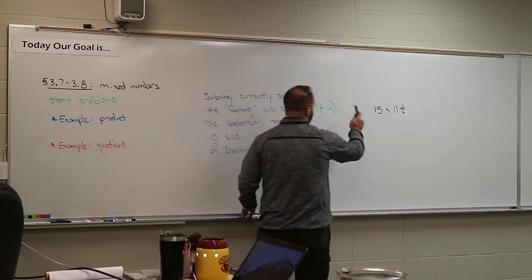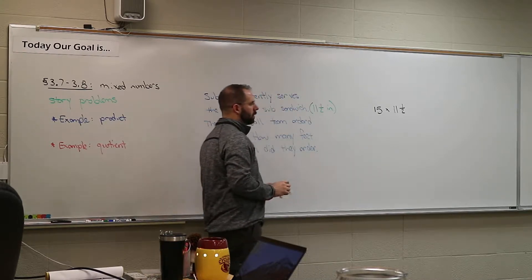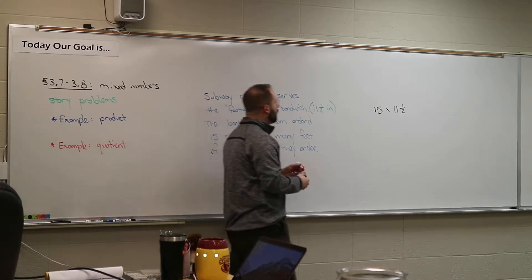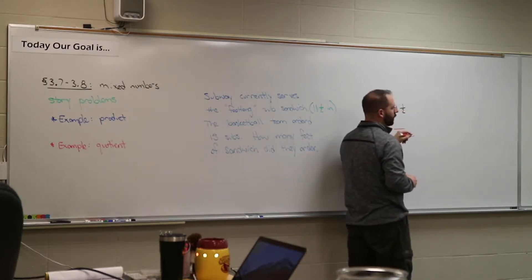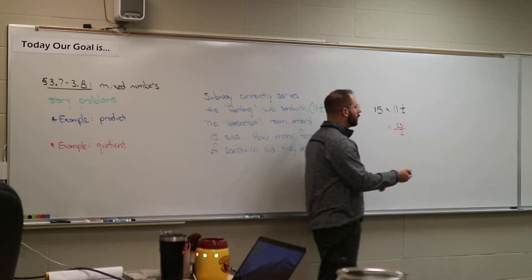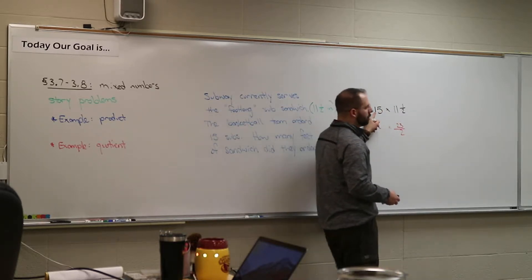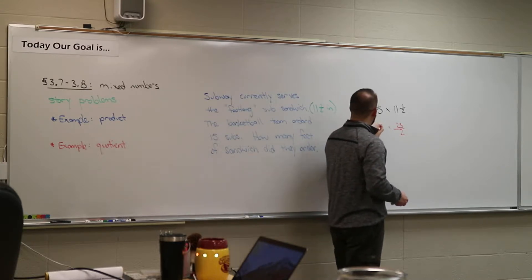Okay, so this is what you're doing. Notice, it didn't ask me to break them up. It didn't say that you had like one large sandwich and you're breaking them amongst 15 players. They're ordering 15 subs. So, you take 15 times how long each one is. That's kind of the idea. That's how I read this question. Okay, so, if we're going to multiply, what do we have to do first?